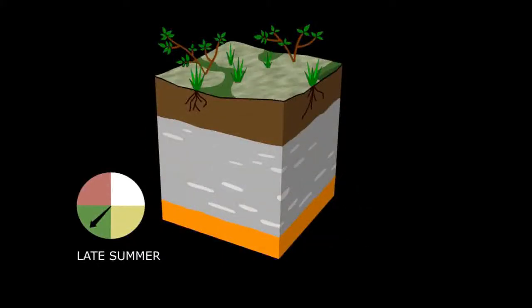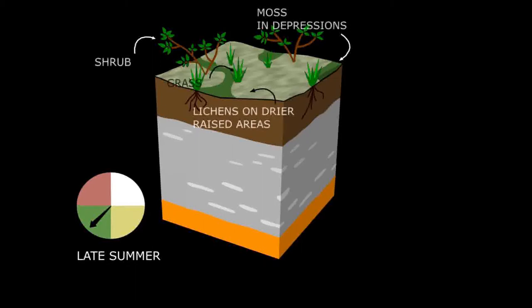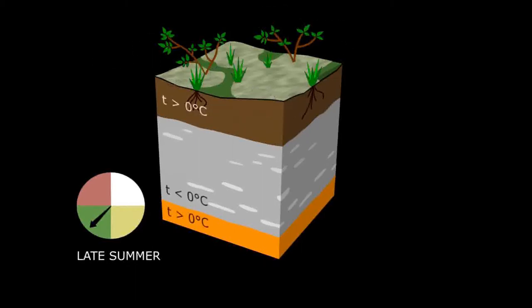In summer, if we dig down in the tundra, we see the top layer of soil is not frozen and supports vegetation, but the layer beneath is still frozen.